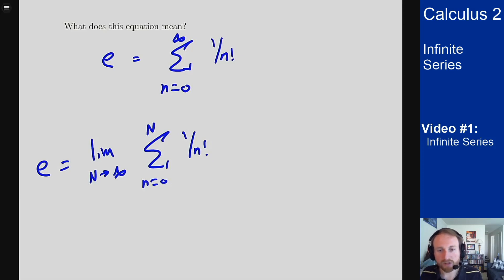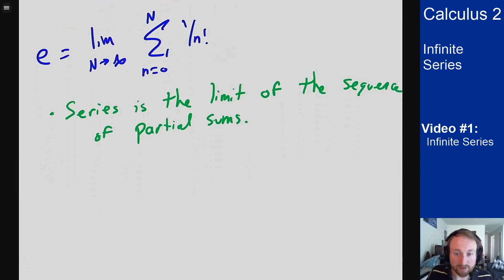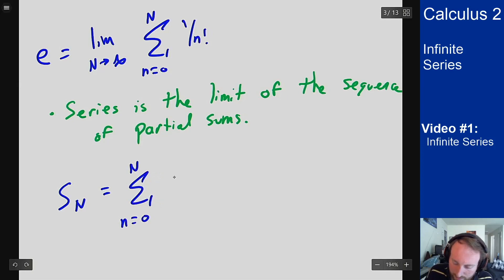So the way we generally talk about this is the series is the limit of the sequence of partial sums. So what does that mean? Well, that means if I define, and this is the common notation here, S_N, which I know looks like Simpson's rule, but these come up in very different circumstances, so you should be able to distinguish between the two.